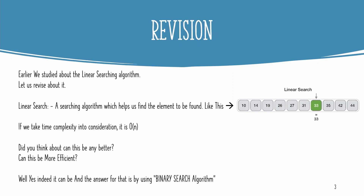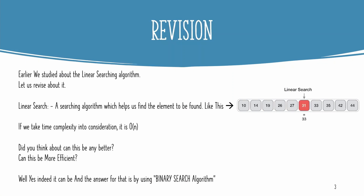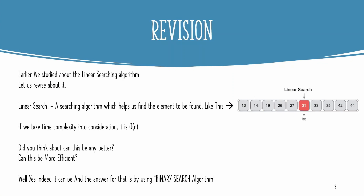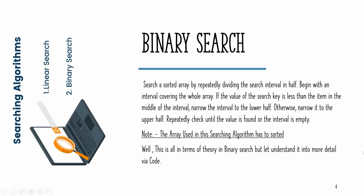Before moving towards binary search, let's quickly revise the searching technique we previously learned — linear search. If you haven't heard this term, don't worry; we have a detailed linear search video in our playlist. Linear search is a straightforward algorithm that compares every element in the array until it finds the key. It has a time complexity of O(n), and to make a more efficient algorithm with reduced time complexity, we use binary search.